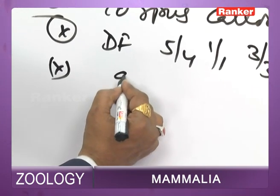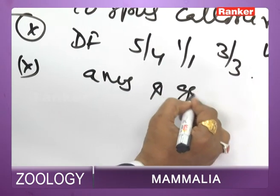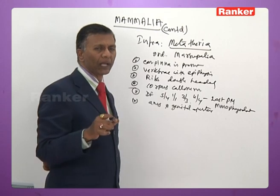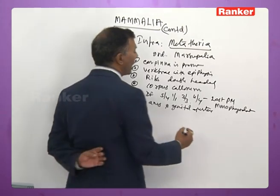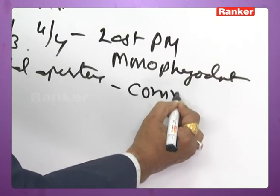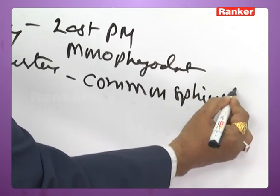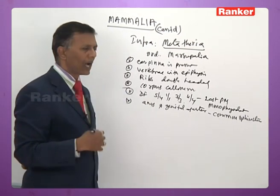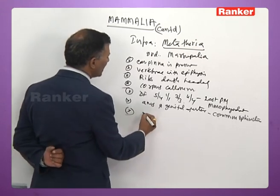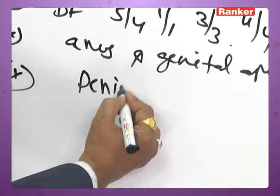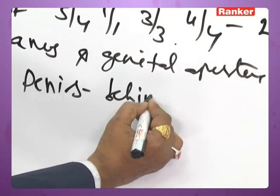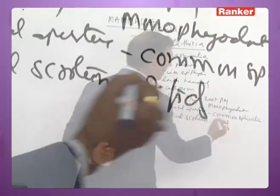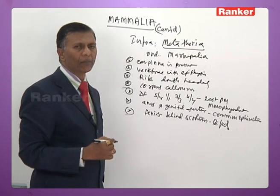The anus and genital aperture are covered by a common sphincter — they do not have a true cloaca, but both openings share a common sphincter. Another unique character: the penis lies behind the scrotum and is bifid.